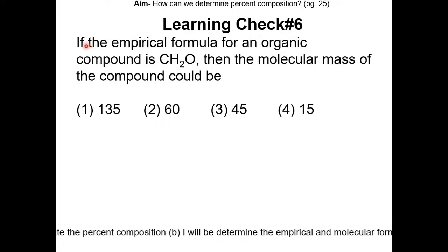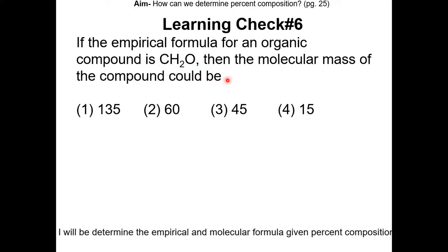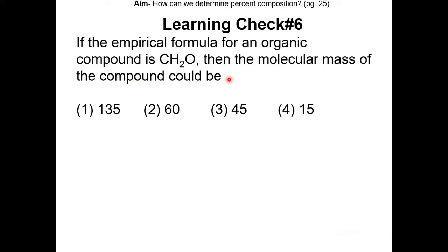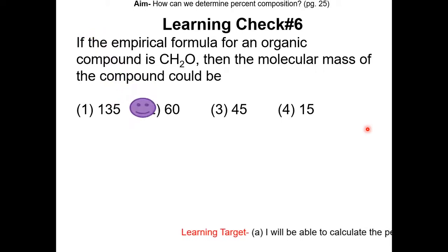Learning check number 6: if the empirical formula for an organic compound is CH2O, what could the molecular mass of the compound be? Pause the video and resume once completed. The first step is to figure out the GFM of CH2O, which is 30 grams per mole. Next, you look for a multiple of 30. Based on the answer choices, that would be choice 2, which is 60, because 60 is a multiple of 30.